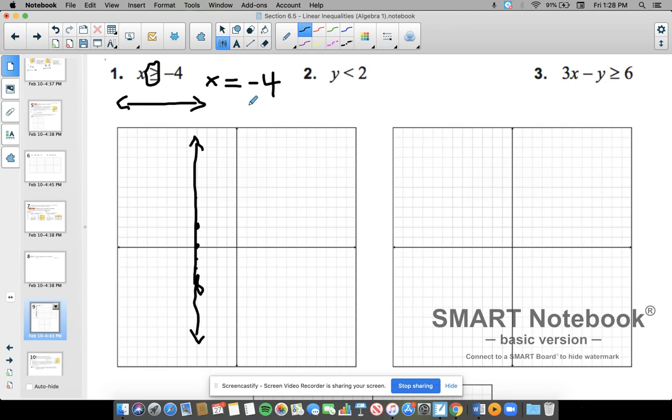Last part is pick a test point. Pick a test point. So it's got to be on one side or the other. So I'm going to pick, let's just go, I love to use zero, zero, as long as the line doesn't run through there. So I pick a test point. And what I do is I plug it in. So there is no Y. So I just take the zero X value.